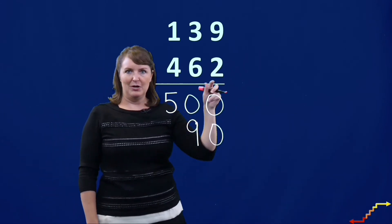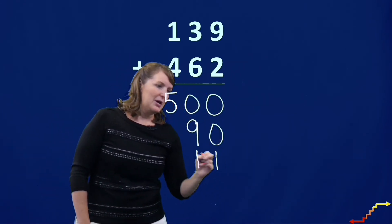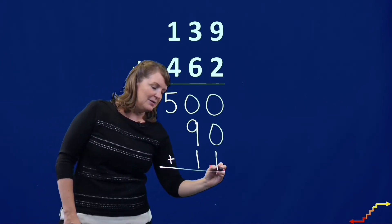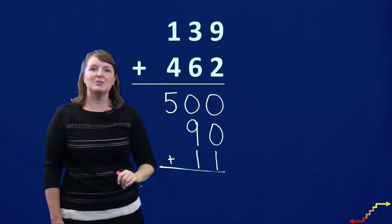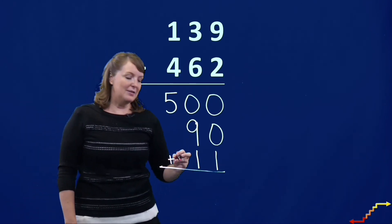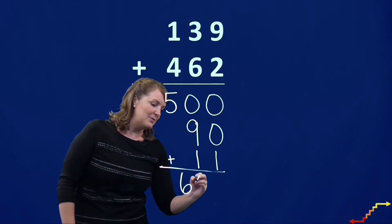And then we have 9 plus 2. 9 plus 2 is 11. So each of these are my partial sums. That's where the name of this strategy comes from. And I'm going to add those partial sums together. 500 plus 90 is 590. Plus 11 would be 601.